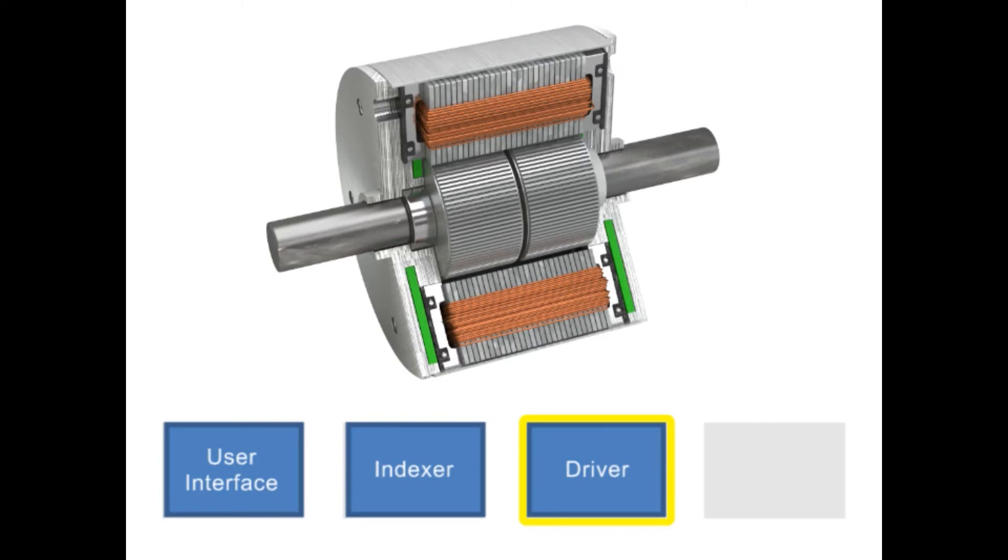The number of steps the motor turns is equal to the number of pulses transmitted to the driver. The stepper motor is a brushless electric motor that converts pulses into mechanical shaft rotation. Each pulse moves the shaft through a fixed angle defined by the multiple toothed electromagnets arranged around a gear-shaped rotor.